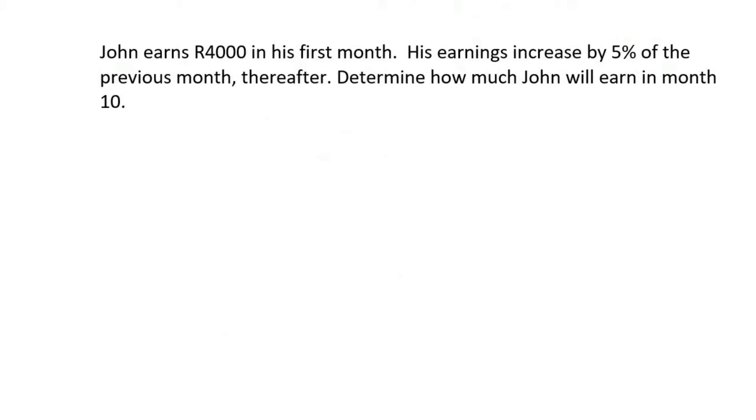John earns 4,000 Rand during his first month and then his earnings increase by 5% of the previous month thereafter. So what that means is that in month one he earns 4,000, then in month two you have to add 5%.